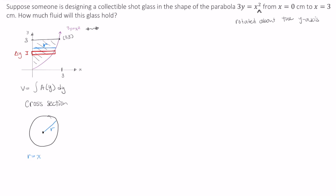Let's rewrite this: x = √(3y). That means the area of this cross-section is π(√(3y))² = 3πy. Now we can set up our volume.